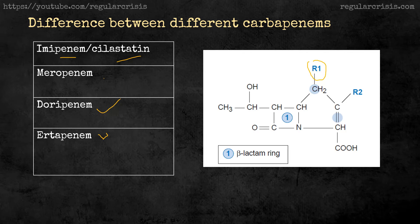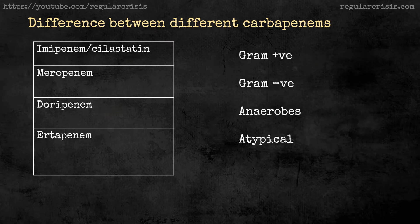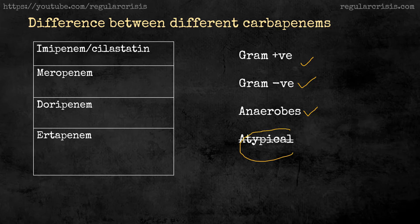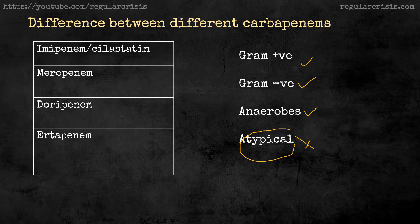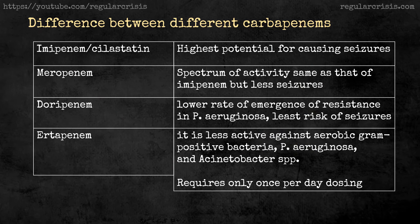Meropenem, doripenem, and ertapenem all have both R1 and R2 groups. The R1 is usually the same methyl group across these three; the difference lies in the R2 molecule, which gives each of them distinct properties. The common features among all carbapenems are that they are active against most gram-positive, most gram-negative, and most anaerobic organisms. However, they are not active against atypical organisms, because atypicals don't have a cell wall, so there is no target for the carbapenem to act on.